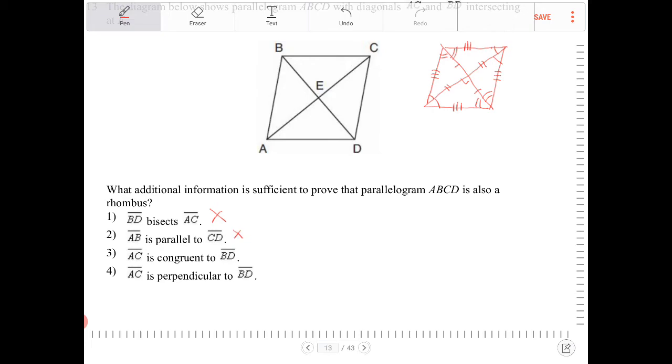AC is congruent to BD. AC congruent to BD is not a requirement. AC and BD can be congruent and that would be a more specific kind of rhombus, a square, or it could also be a rectangle. So option three is not correct.